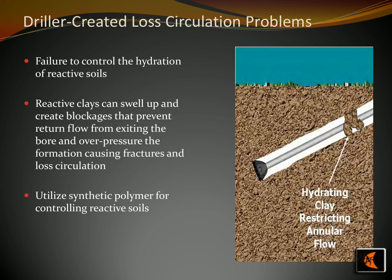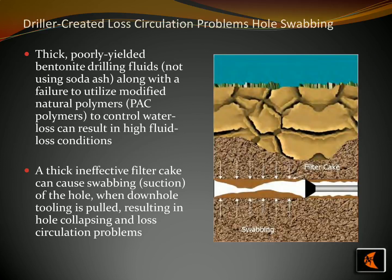Drilling a borehole can be difficult for drillers when managing loss of circulation. Fluid or mud is lost to the subsurface, resulting in costly and time-consuming setbacks. Reactive soils such as reactive clays can cause blockages and prevent return flow from the bore, resulting in overpressure in the formation. To prevent this, controlling the hydration of reactive soils with the use of a synthetic polymer can form a protective layer between the formation and the drilling fluid, thereby preserving circulation throughout the borehole. Bentonite drilling fluids are essential for successful drilling operations, and soda ash must be used for mixing and thickening. Modified natural polymers such as pack polymers must be included, forming a thick filter cake that will not collapse when downhole tools are pulled.